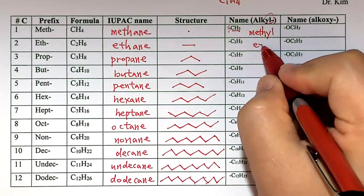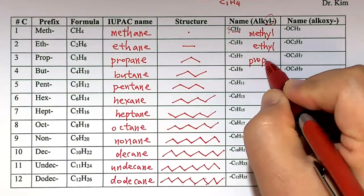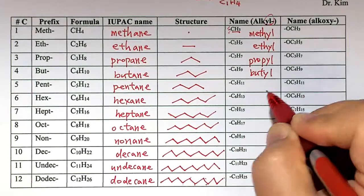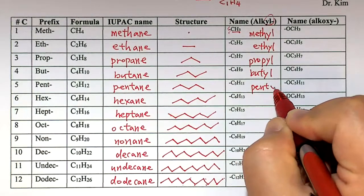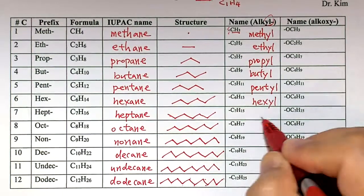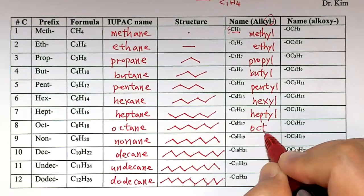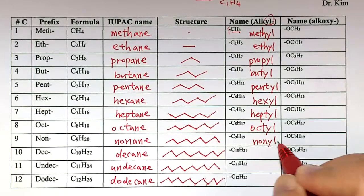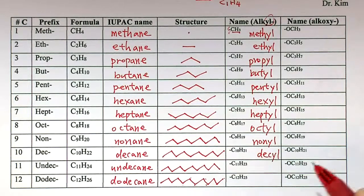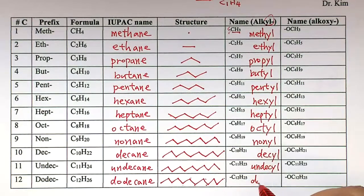So this becomes meth + yl = methyl, then ethyl, propyl, butyl, pentyl, hexyl, heptyl, octyl, nonyl, decyl, undecyl, dodecyl.